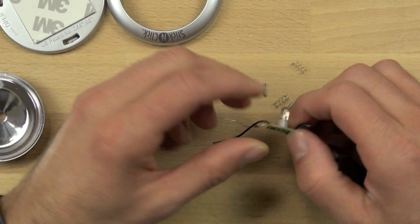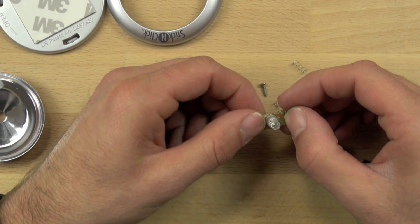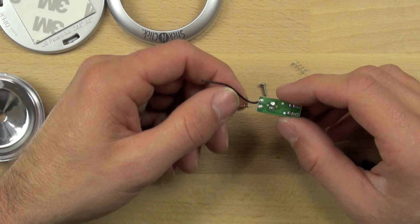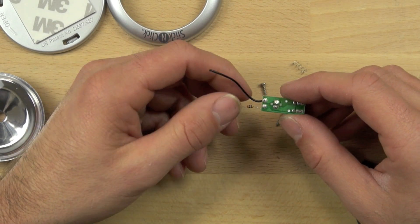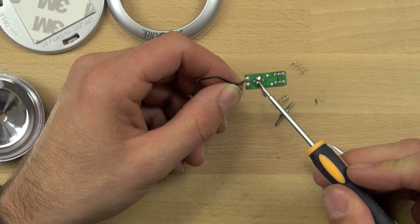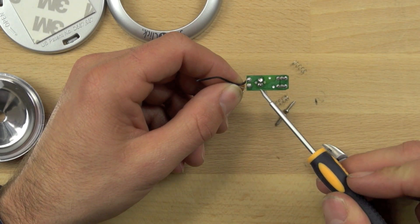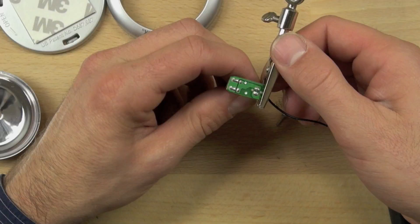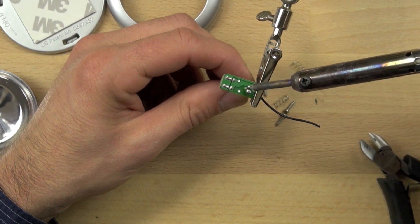So now what we need to do is figure out where the power is going, so we can know how to hack this switch. There are two traces that we need to connect to. We want to connect to the trace right here and then the trace right here. Those two traces will allow us to complete the circuit and use the switch to turn the power on and off.